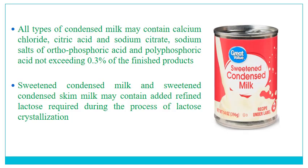All types of condensed milk may contain calcium chloride, citric acid, sodium citrate, sodium salts of orthophosphoric acid, and polyphosphoric acid, not exceeding 0.3% of the finished product. Sweetened condensed milk and sweetened condensed skim milk may contain added refined lactose required during the process of lactose crystallization. To reduce the size of lactose crystals, some fine crystals are used as seeding, so the lactose content may slightly increase.